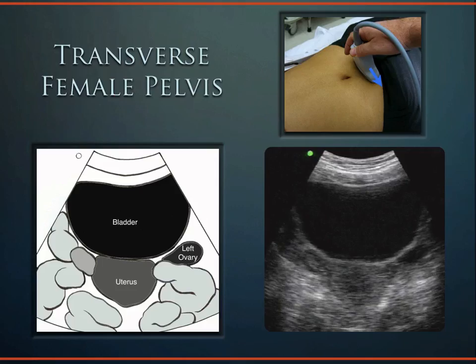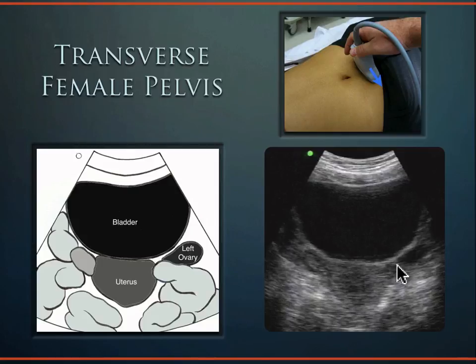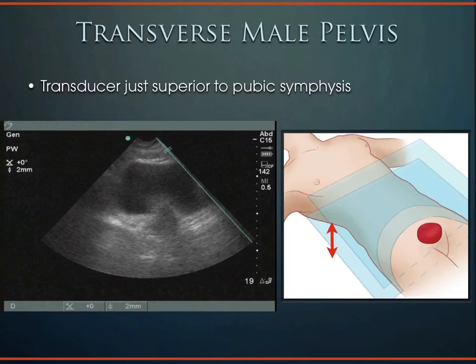In the female pelvis, a full rectangularly-shaped bladder is visible, and posterior to it is the uterus — which looks like a little koala bear face with the ovary as the ear. Can you see ovaries transabdominally? Almost always no, though occasionally in a very thin female with minimal body fat, a full bladder, and a very anterior ovary — especially if there's a cyst. Generally you need the endovaginal probe for ovaries.